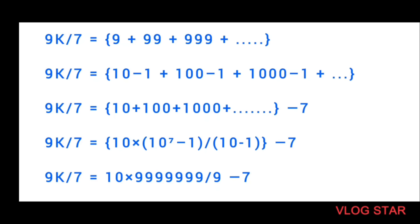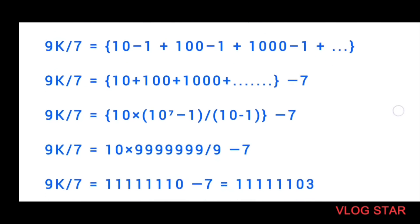Hence I subtracted it, solved it, and subtracted 7. It becomes very easy if you use the GP formula: a into r raised to n minus 1 divided by r minus 1.